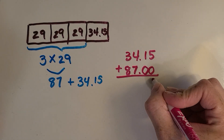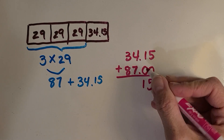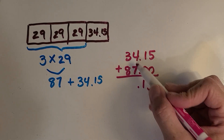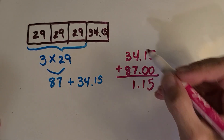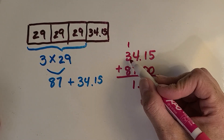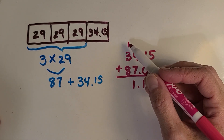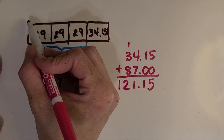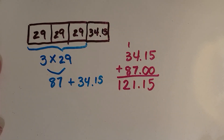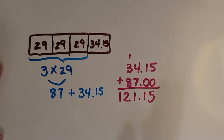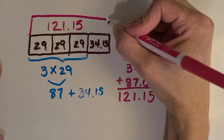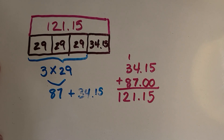Now we can add: 5 plus 0, 1 plus 0 — those were easy. I bring my decimal point straight down when I'm adding or subtracting. What is 4 plus 7? 11. And 8 plus 3 is also 11, plus that extra 1 is 12. So I can say that I spent a total on gas and hot dogs of $121.15. If I was adding to this strip diagram, here's my total at the top. Alright, great work!